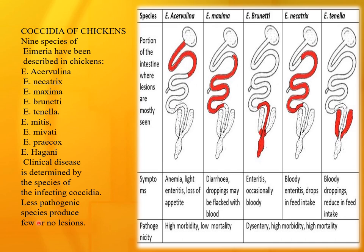Some pathogenic species produce few or no lesions. The main species and their locations: Eimeria acervulina in the anterior intestine, Eimeria maxima in the mid-intestine, Eimeria brunetti in the lower intestine, Eimeria necatrix in the mid-intestine, and Eimeria tenella in the caeca.